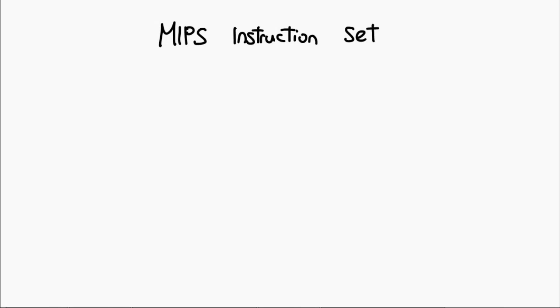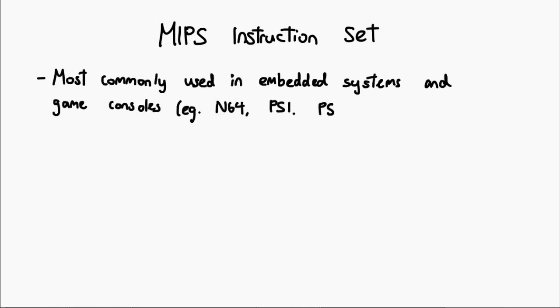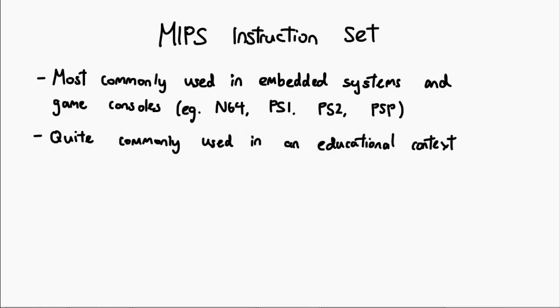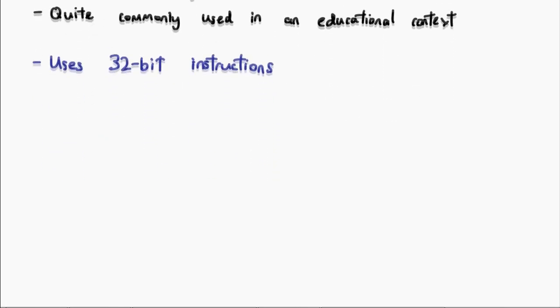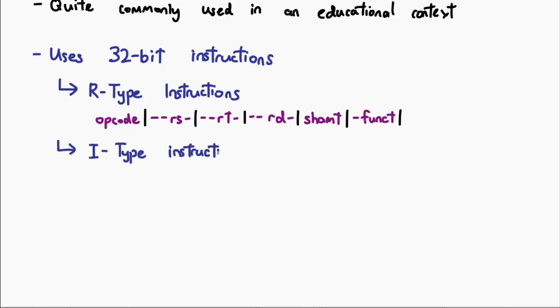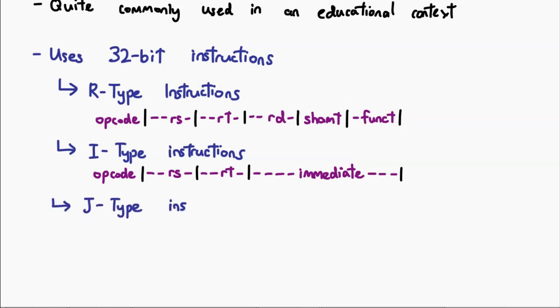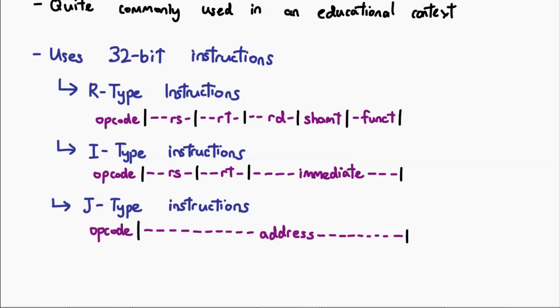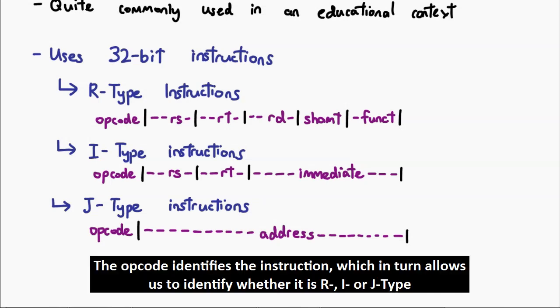Having come this far, it is now time to actually look at several example instructions. For this purpose, we'll look at the MIPS ISA. It's not an extremely common use, but its relative simplicity makes it a good educational tool. MIPS instructions are 32 bits in length, and there are three different instruction types — three different ways in which we can divide up the 32 bits. They are known as the R, I, and J type instructions. The first six bits always refer to the opcode, and that is how MIPS tells apart the different types of instructions, since different opcodes are associated with different instruction types.